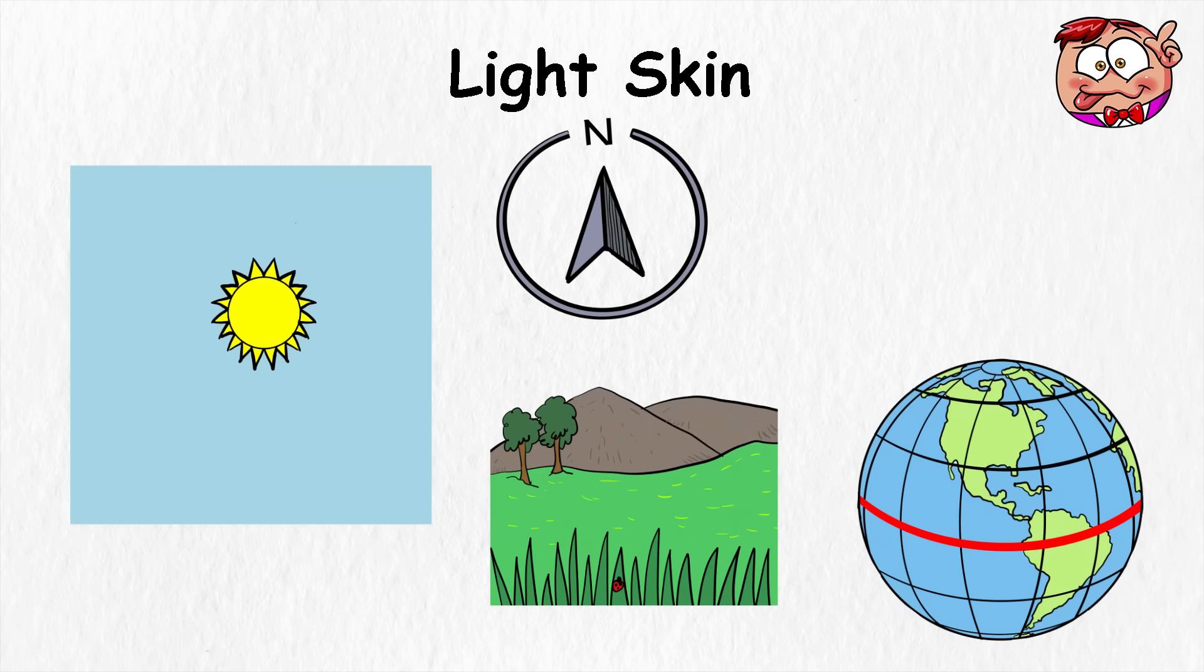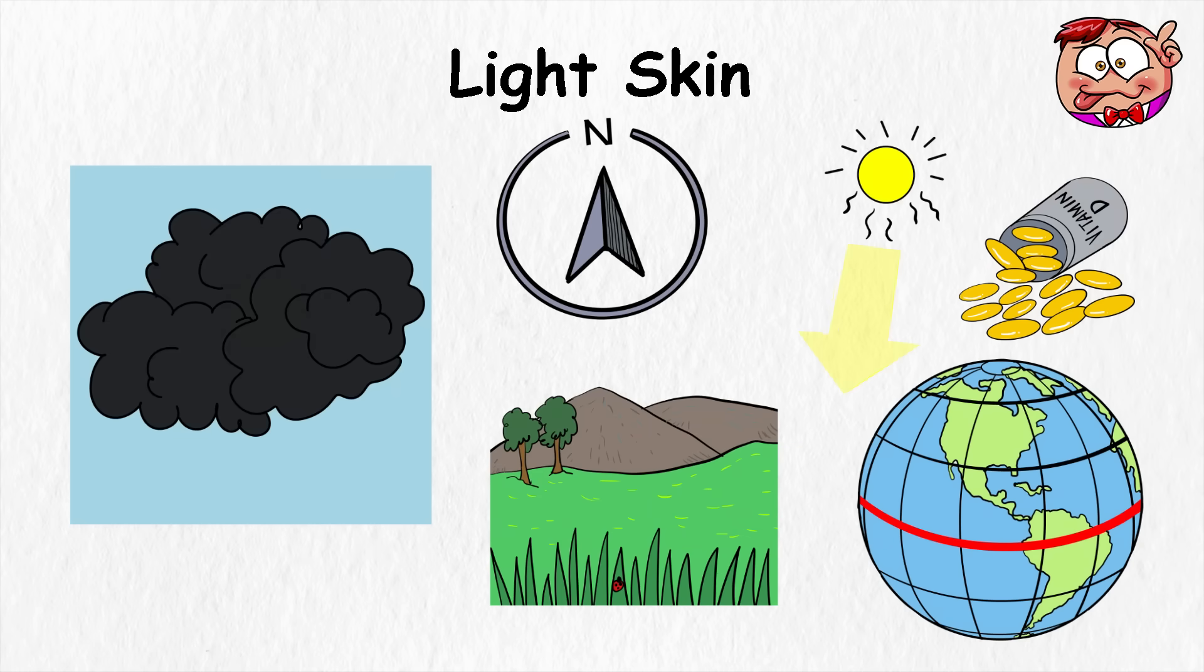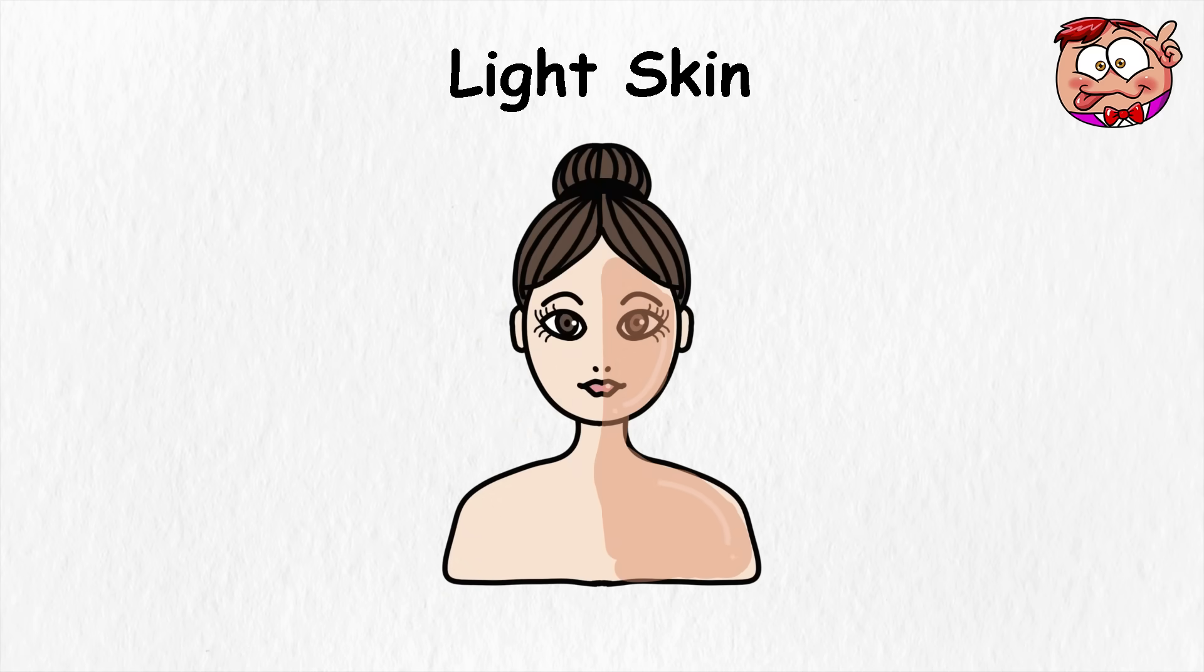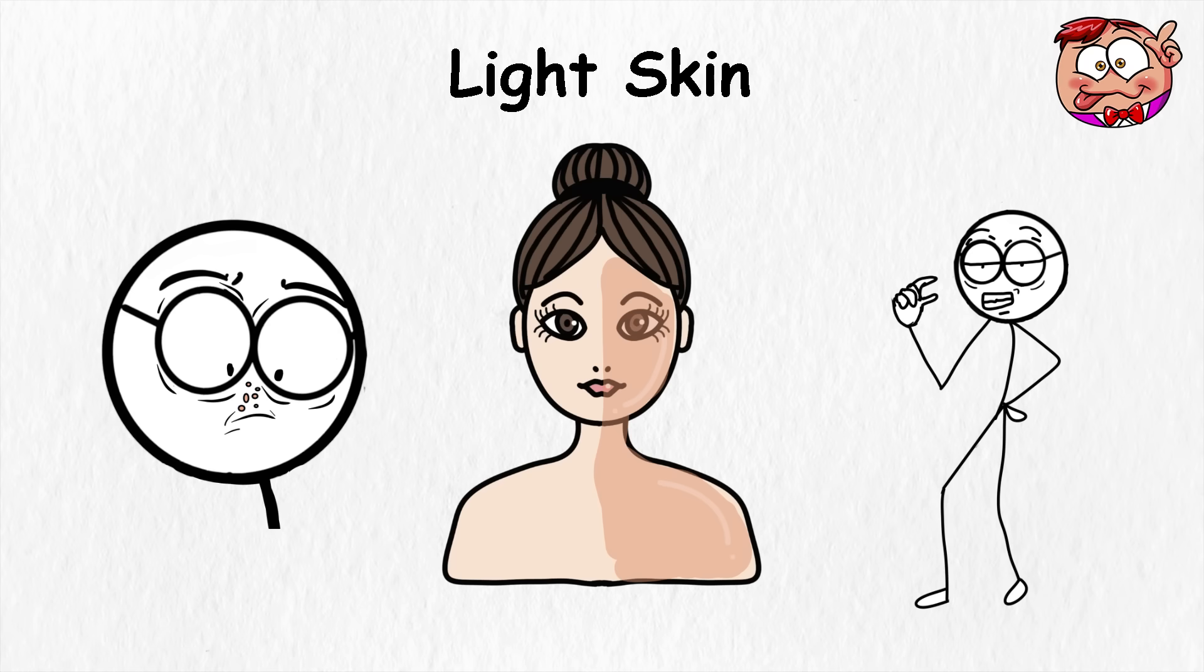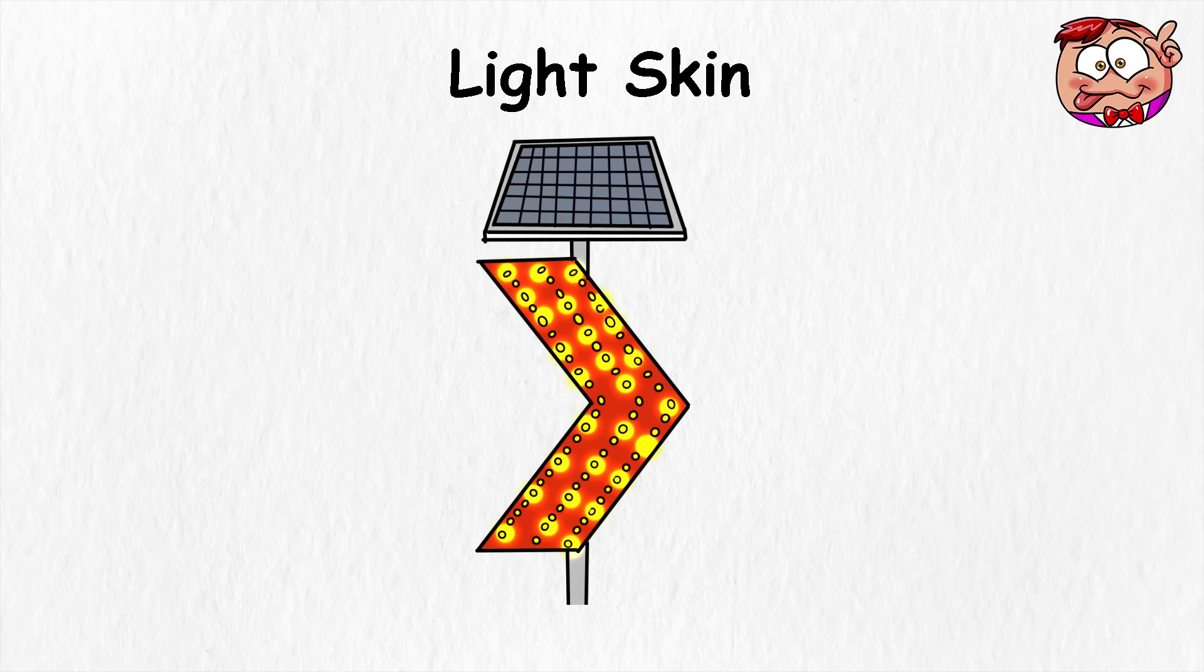It's the middle ground, light enough to soak up vitamin D when days are cloudy, but dark enough to handle a sunny afternoon without instantly burning. This skin tone can tan, though usually only a little. It's also where freckles show up the most, scattered across the faces and shoulders like tiny solar warning signs.